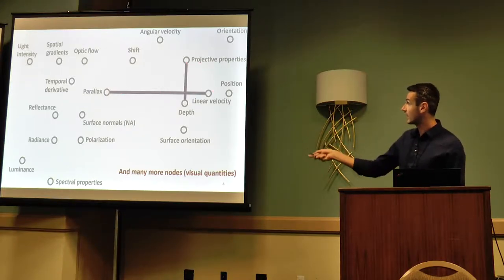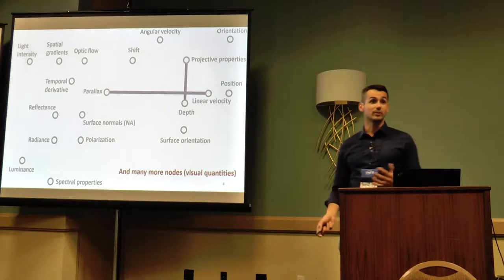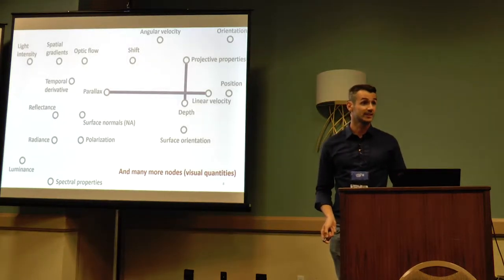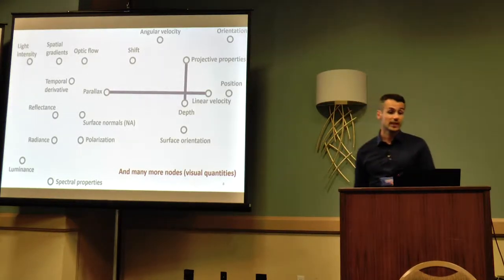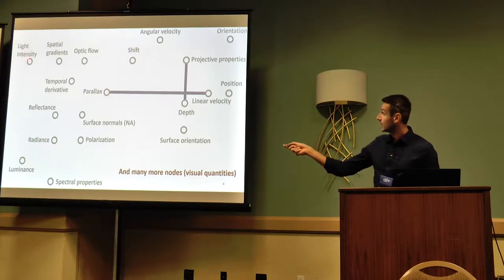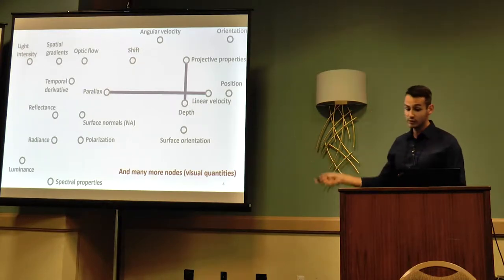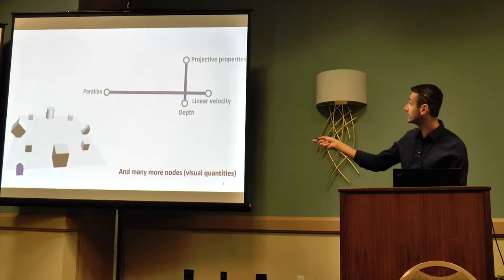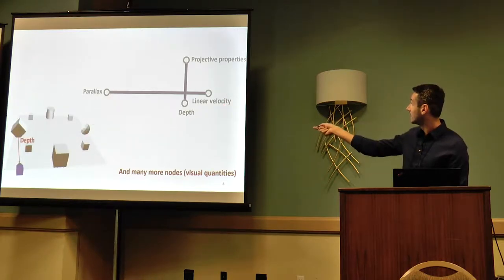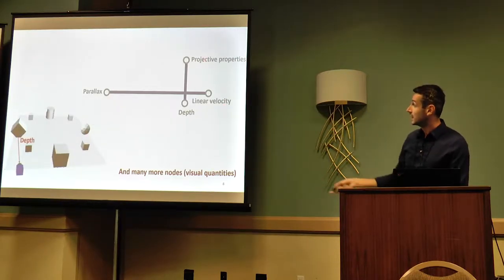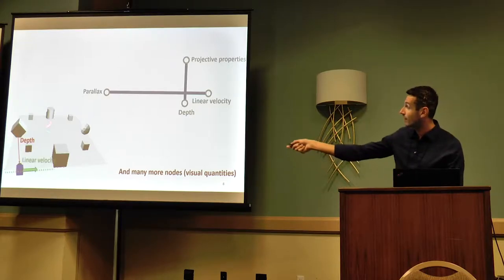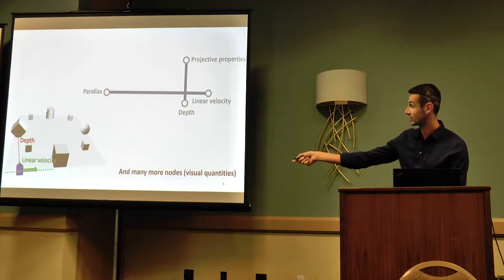Well, you might not have a parallax sensor. However, between all these quantities, we have geometry, assumptions we make about the world, assumptions we make about the physics, and we know how each of these quantities relates to each other. Each of the edges in this graph corresponds to some relation that exists between visual quantities of interest.